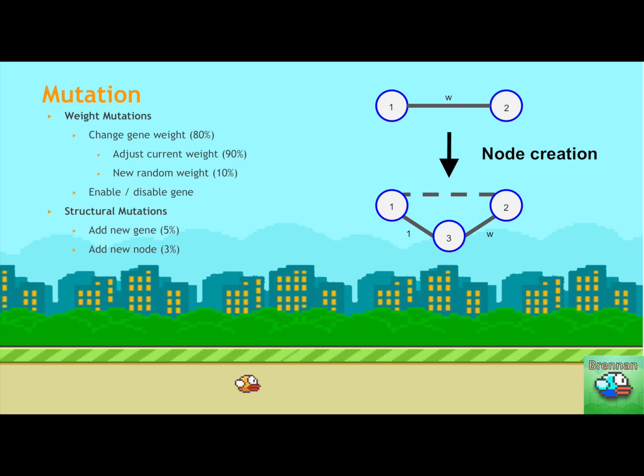And then the way that more complex structure and neurons are added is through the structural mutations. So you have a 5% chance of adding a gene between two existing neurons in the neural net. And you have a 3% chance of adding a new node. And on the right, you can see what happens during this node creation, that you select a random gene, you disable it, and then you create a neuron in its place with two of the genes connecting the previously disabled gene's neurons. And it's important to notice that the weights here, one of the weights, or one of the genes will have the weight of the now disabled gene. And the other gene will have a weight of 1. And this is important because it minimizes the effect that adding this new node has on the actual structure of the neural net. So it can still maintain roughly a decent optimal approach while it continues on.